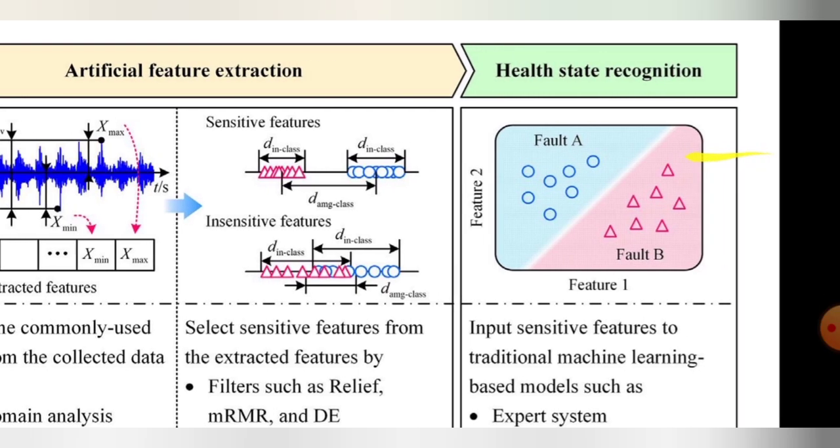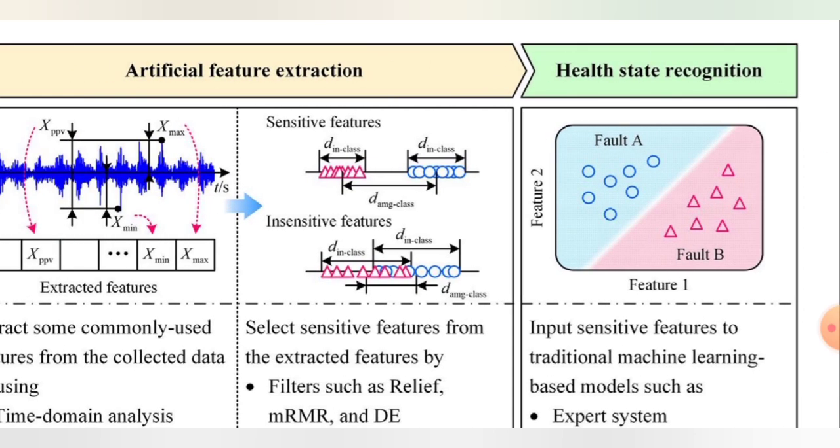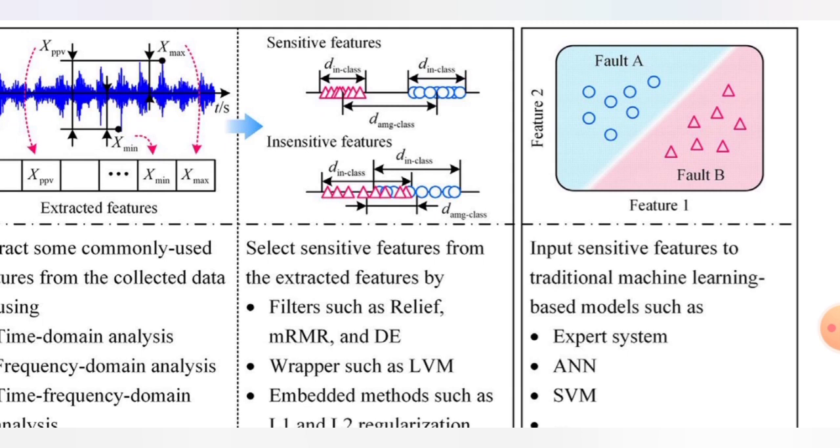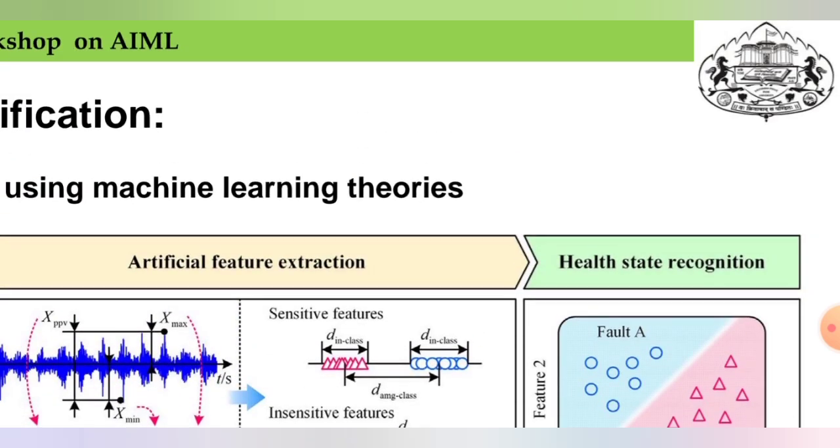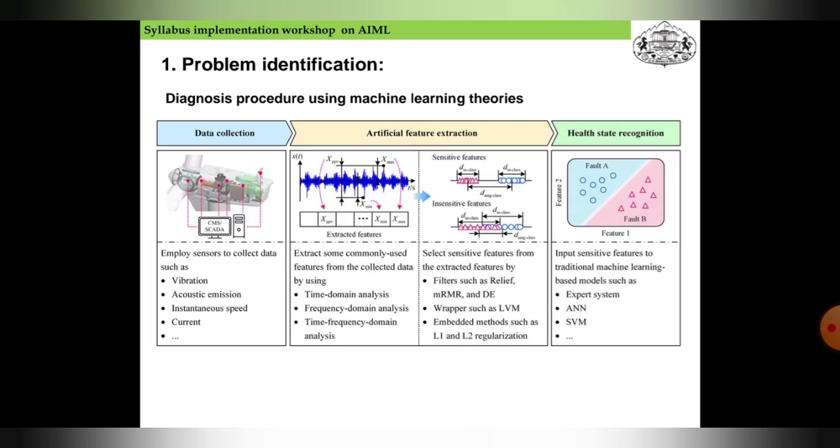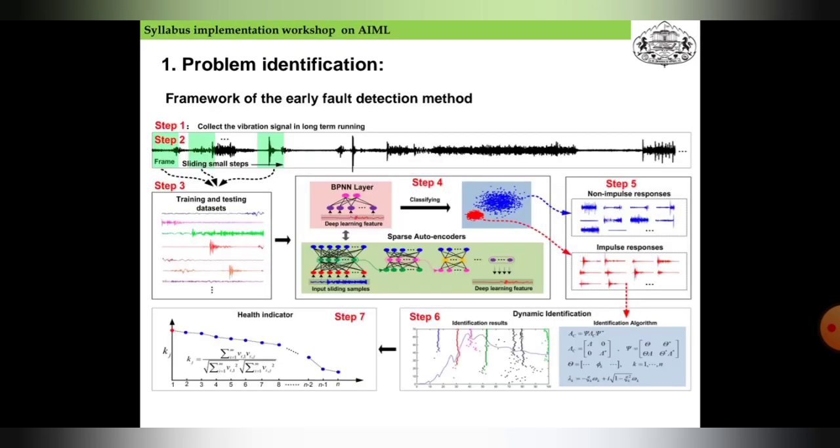Now coming to health state recognition: here we see Feature 1 (Fault B) and Feature 2 (Fault A). Input sensitive features to traditional machine learning-based models such as expert systems, ANN, and SVM. This is the diagnostic process using machine learning theory.